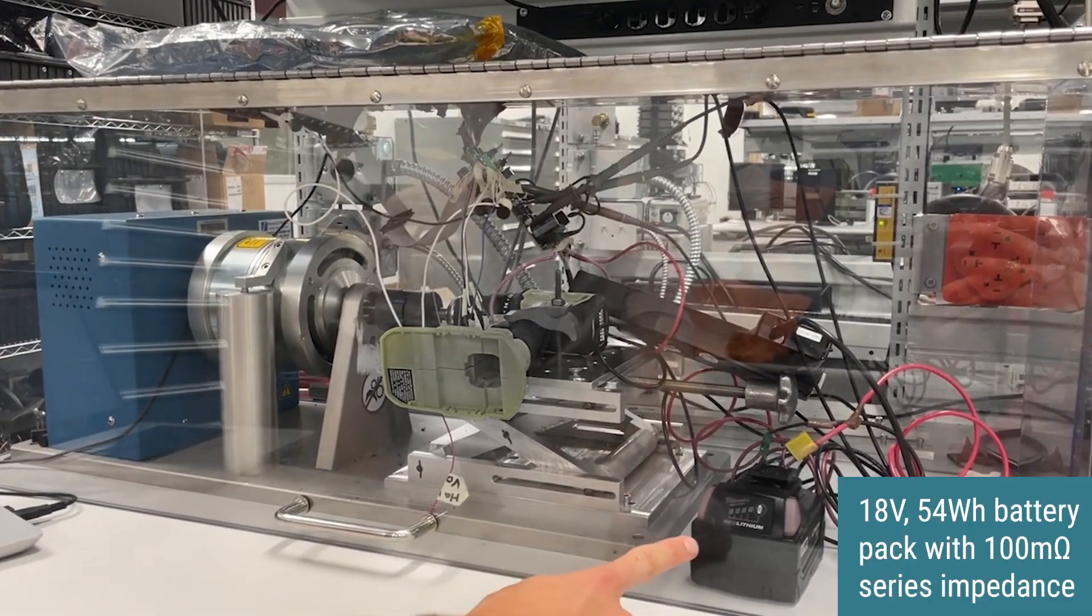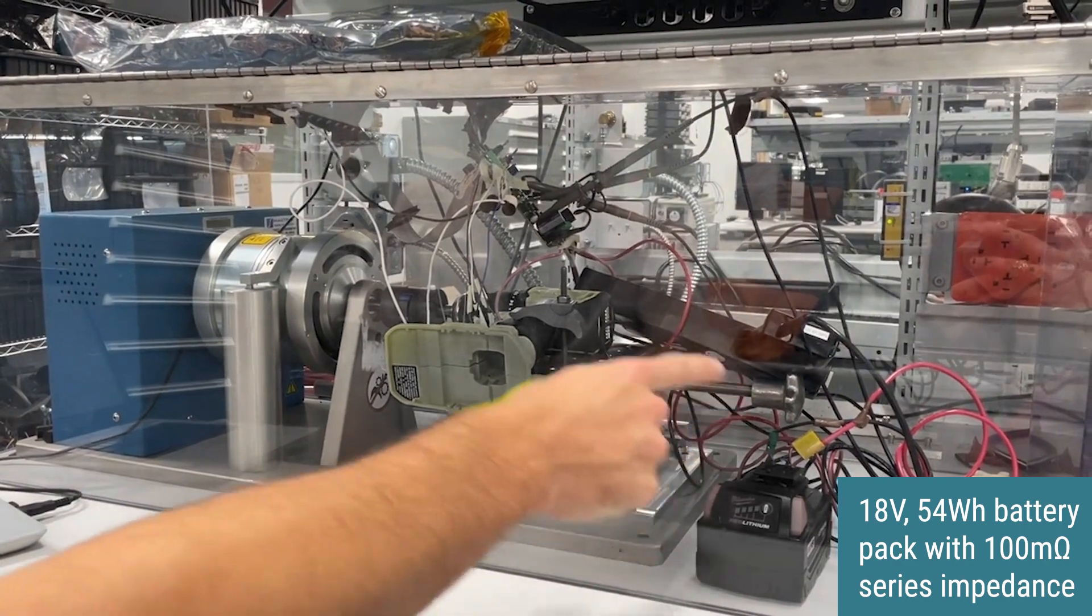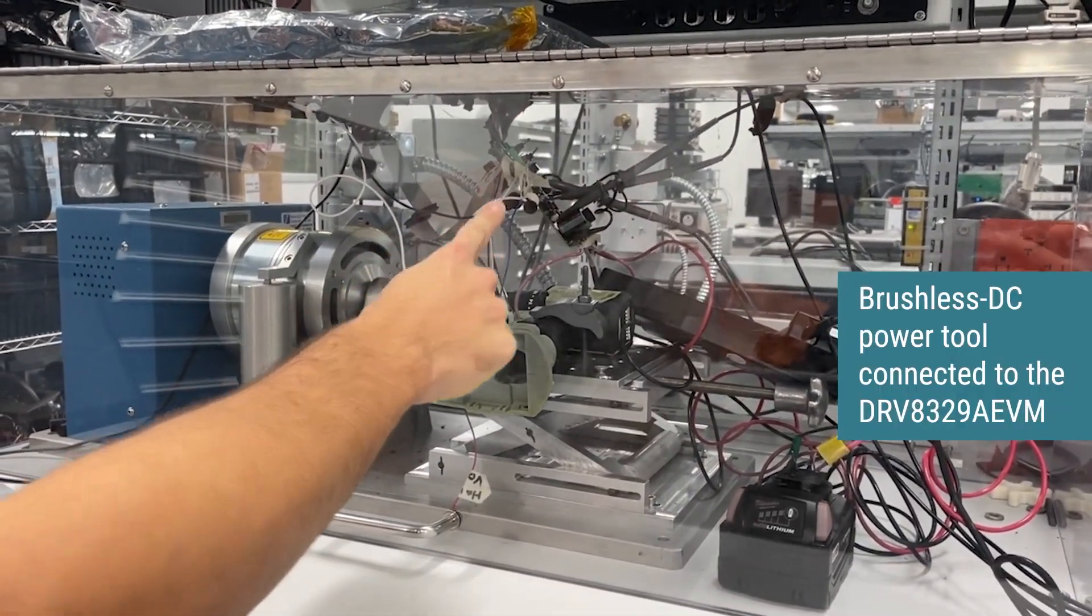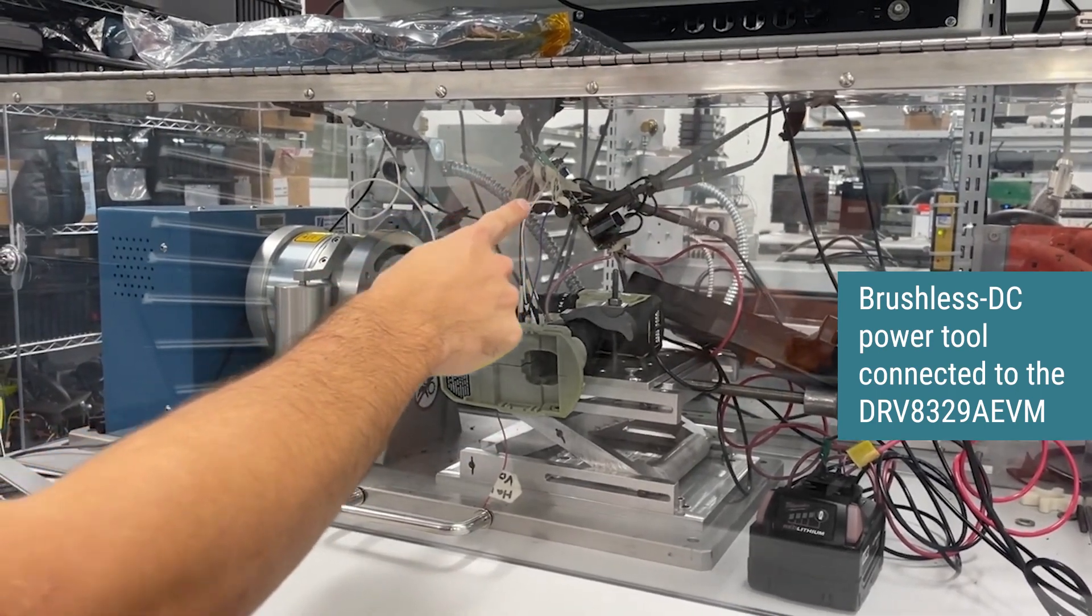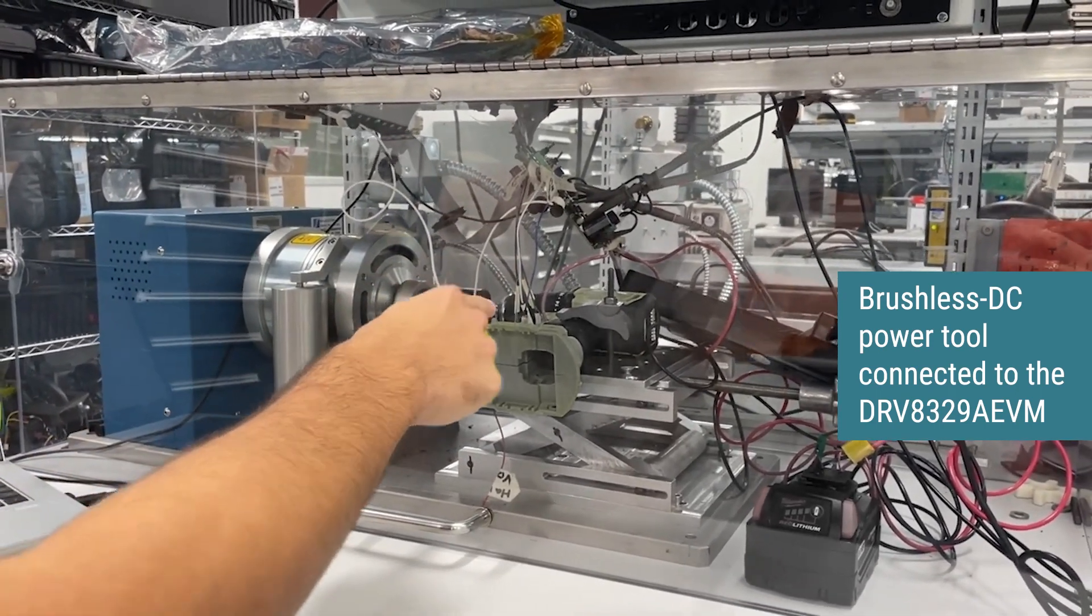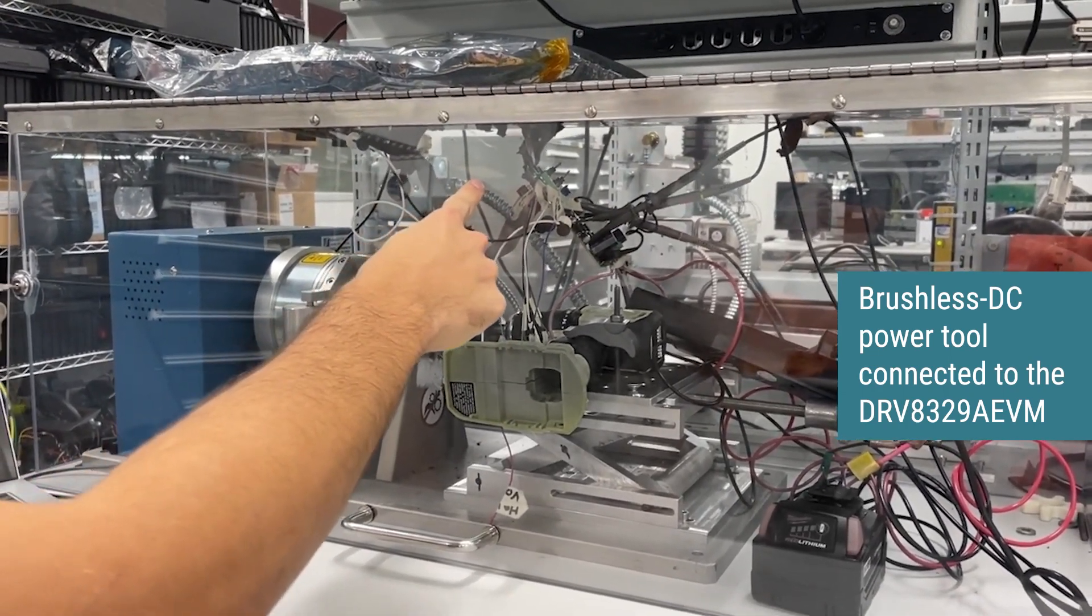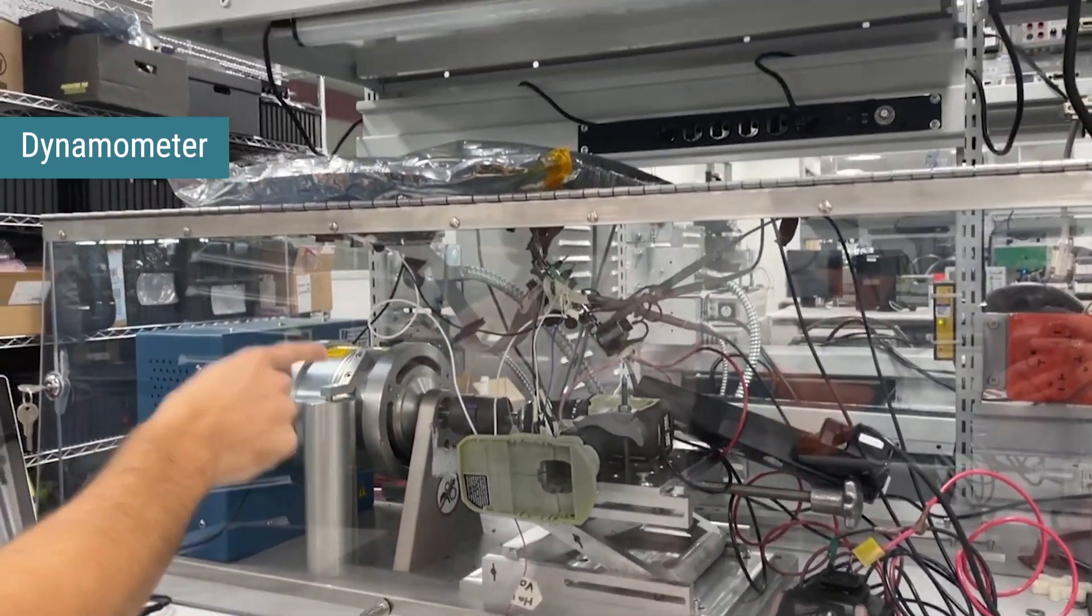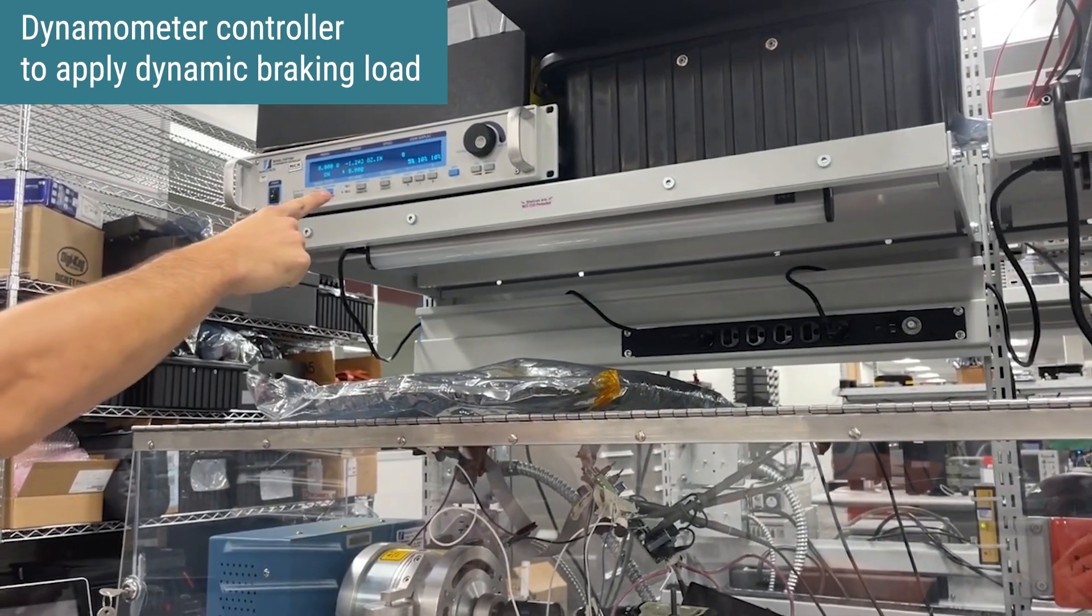I am using an 18-volt battery pack with 100 milliohms of series impedance from the battery to the power supply inputs of the DRV-8329A EVM. I have a power tool connected to the EVM's motor phases and the hall sensor outputs from the motor connected to the hall sensor inputs of the DRV-8329A EVM. The motor is connected to a dynamometer in which I can apply a dynamic braking load by using the dyno controller as the motor spins at 100% duty cycle.